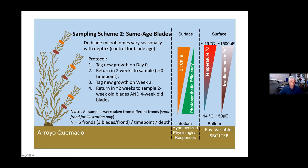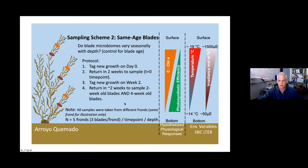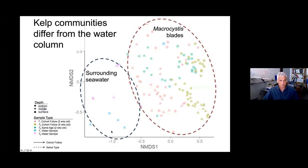This was a pretty intensive study — basically five fronds, three blades per frond, per time point, per depth. There's a lot of data here, and the idea was to run this time series out for several weeks to months. It got halted after two weeks due to inability to get into the field, but some really interesting data was generated from the samples that were collected.